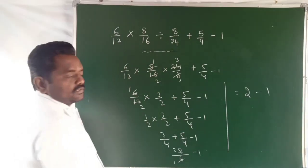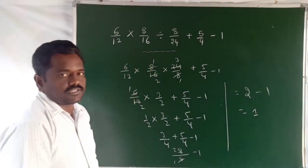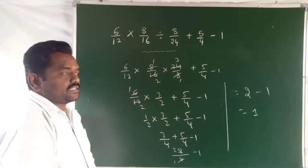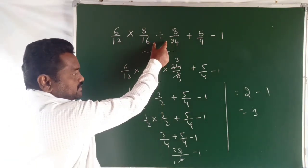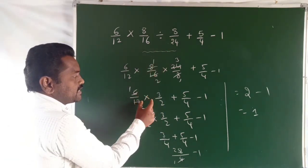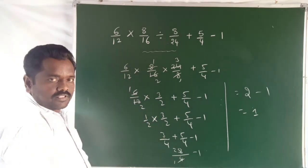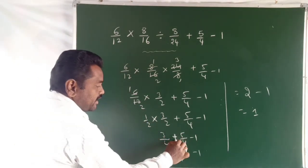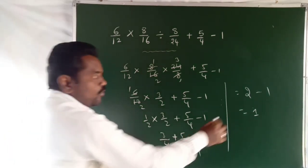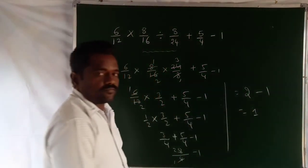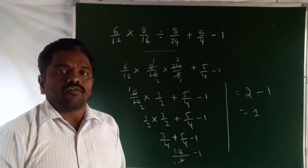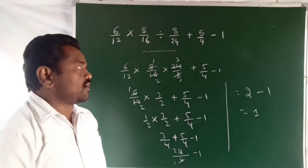That is 1 is our answer. So first is division, second one is multiplication, third one is addition, fourth one is subtraction. This is the primary method, that is BODMAS, the basic trick.